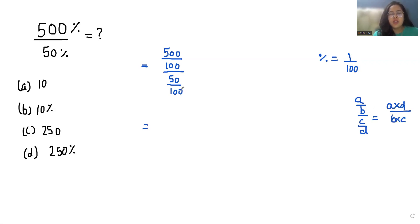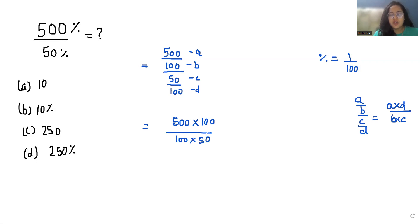So we can label this as A, this as B, this as C, and this as D. So A times D is 500 times 100, by B times C which is 100 times 50. We can cancel out 100 with 100 and eliminate the zeros, giving us 50 by 5 which is 10. So our final answer is option A, that is 10.